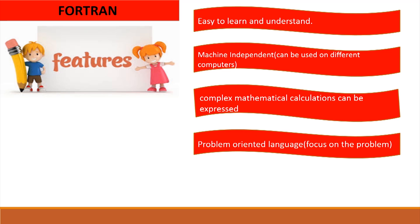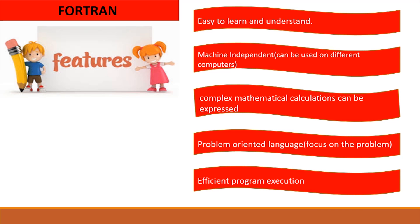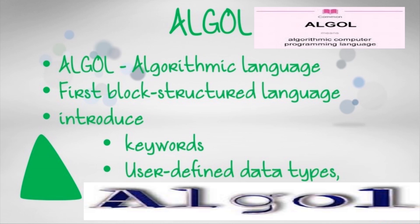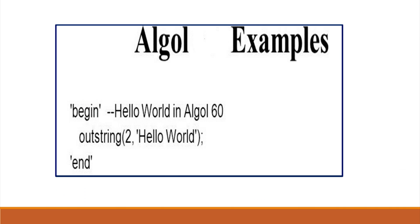Fortran is a problem-oriented language, meaning more focus and emphasis is put on the problem. It is also efficient at program execution. Next, let's talk about Algol. Algol, also known as Algorithm Language, is part of imperative programming languages designed to carry out scientific calculations. Algol was the first block-structured language to introduce keywords and user-defined data types. In an example of Algol code to print 'Hello World', begin and end are used as reserved words.